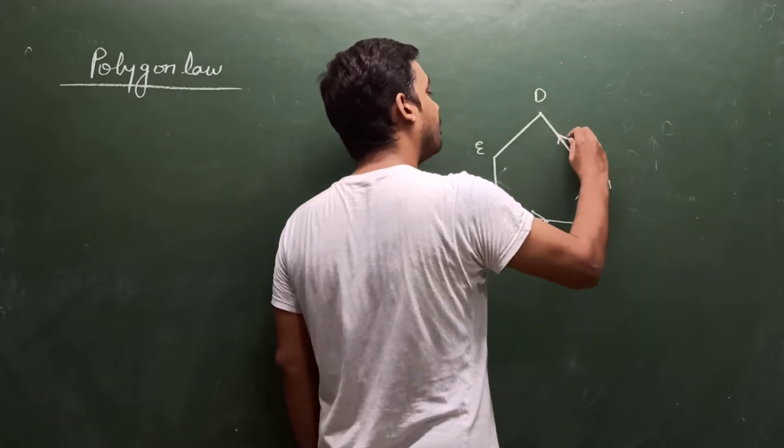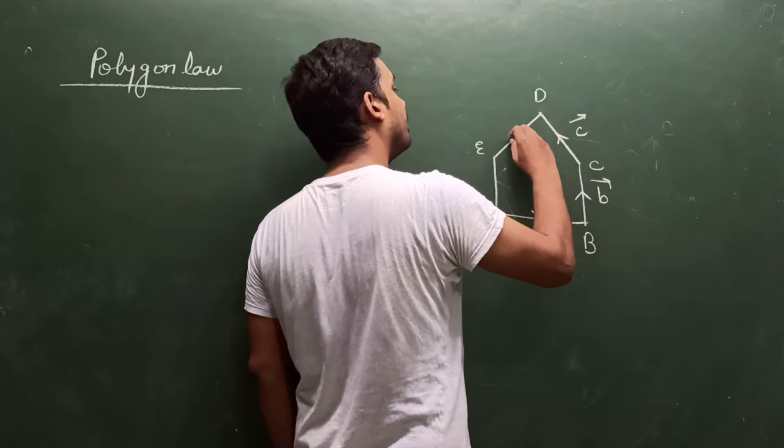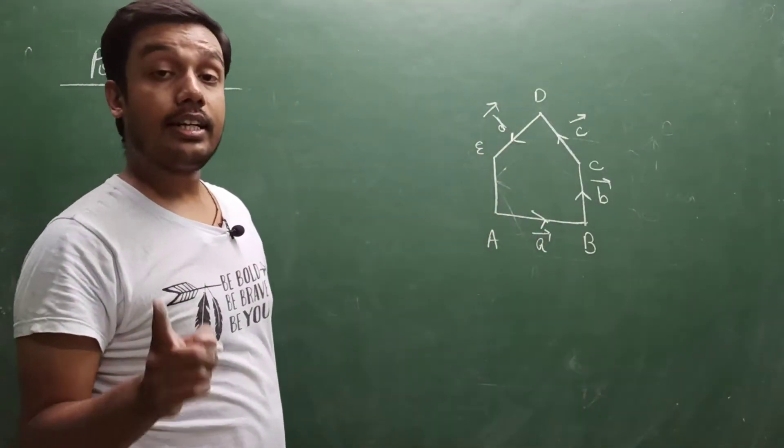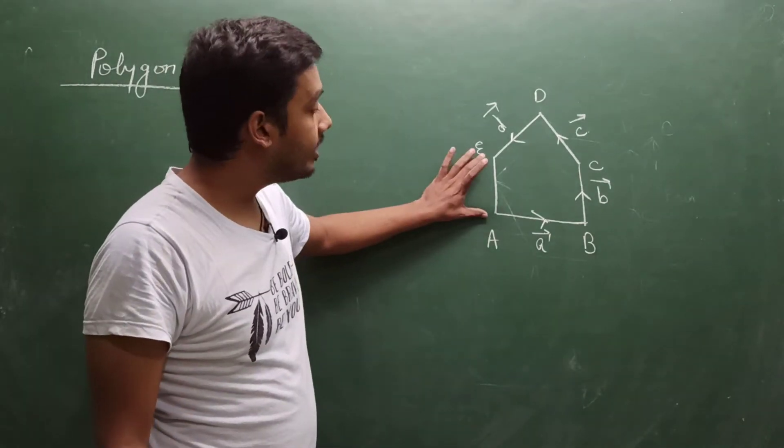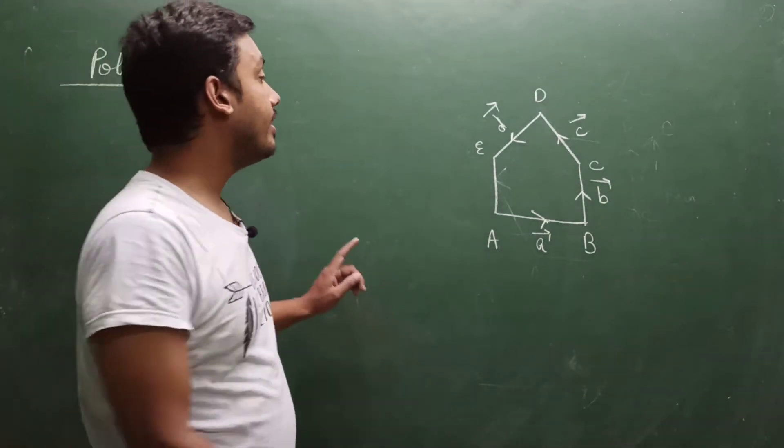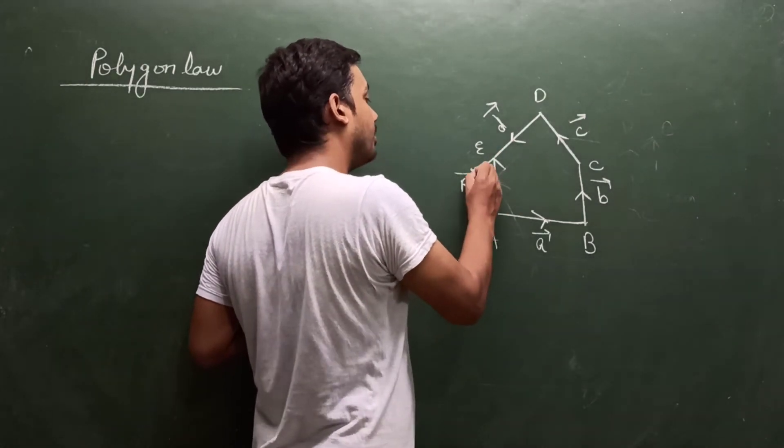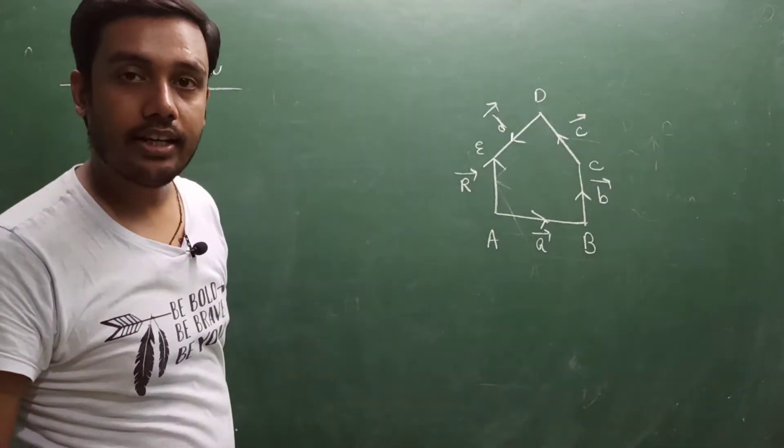This is the resultant. Then the resultant is represented by the closing side of the polygon taken in opposite order. This is the resultant, and its value is R. It is very easy.